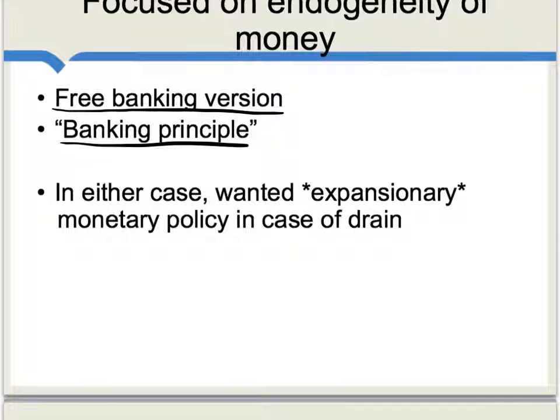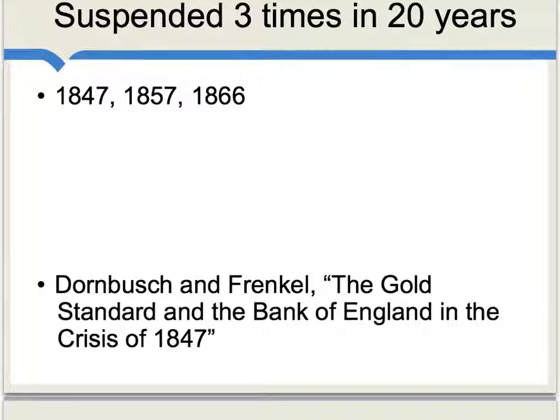Still, there remains a big difference between the Banking School and the Currency School: the Banking School overall wanted an expansionary monetary policy in the case of a drain of gold reserves. How did Peel's Act work out? Not so great. Over the next 20 years, gold convertibility — and indeed the act itself — was suspended three separate times. The external pressures draining gold out of the Bank of England were simply too great, and it was necessary to return, if only temporarily, to a system of paper money with no convertibility. That may have been the better thing to do, but it can be argued it was a sign that the underlying gold standard was in some ways failing.